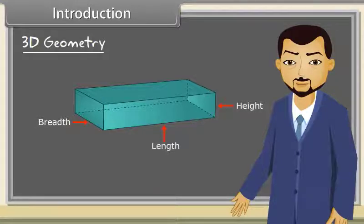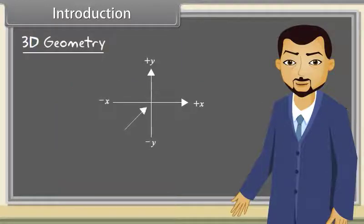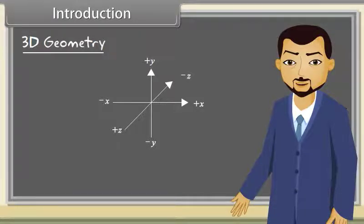Corresponding to that, each point in the Cartesian space has three coordinates: x, y and z. Look at this figure carefully. The x-axis is along the length of the screen. The y-axis is along the height of the screen. And the z-axis will be the one coming out of the computer screen.